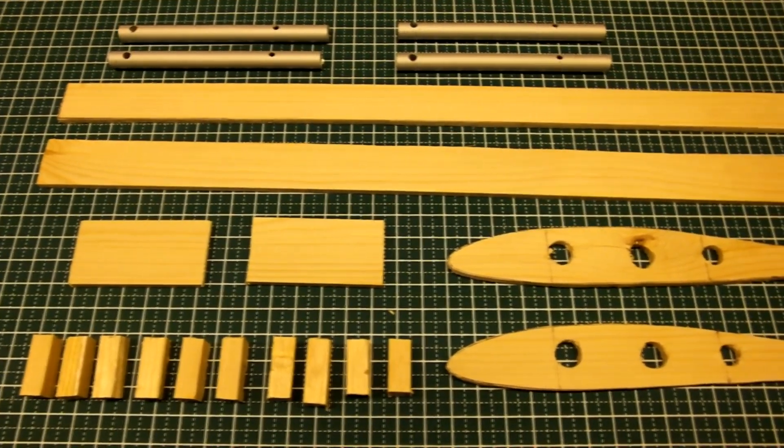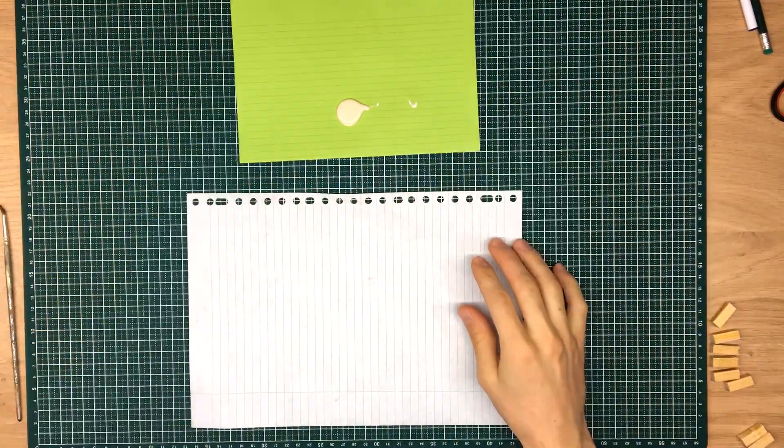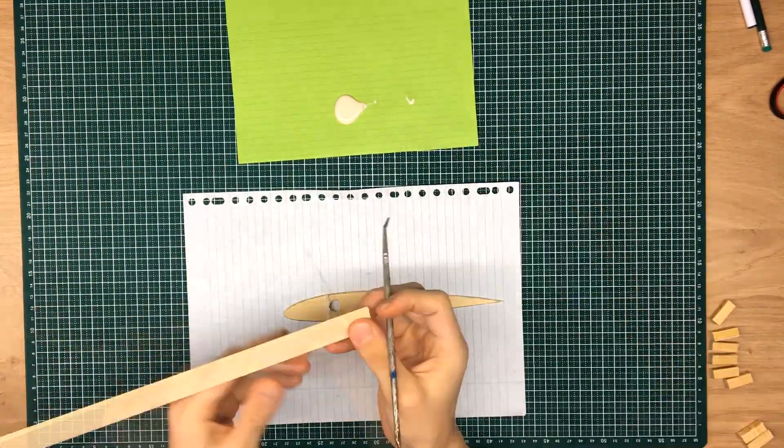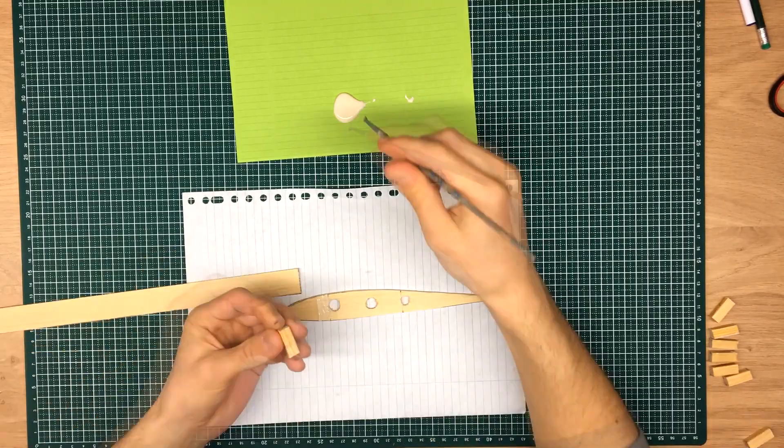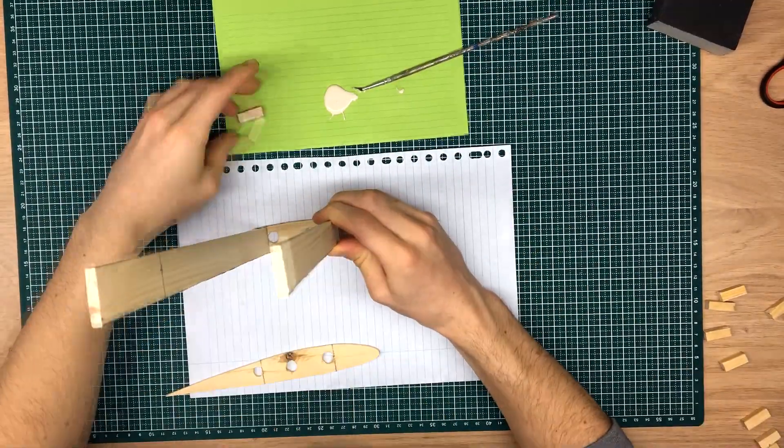All the parts are prepared. Let's start assembling. This time, I decided to use wood glue. Super glue can also be used, but it requires a much smoother surface to bond properly.